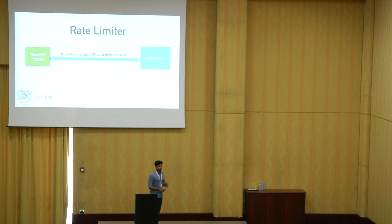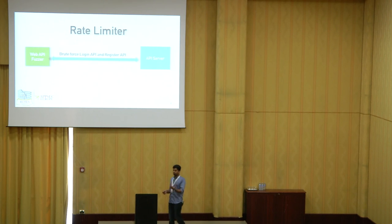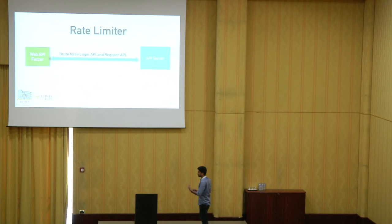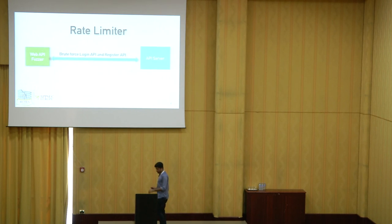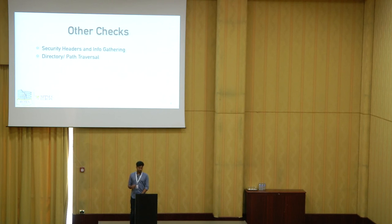We have the rate limiter check, because most mobile APIs don't check for rate limiting. Since it's built for mobile, developers don't think somebody will be brute-forcing the login screen or doing bulk registrations. Those checks are mostly not found in mobile APIs. You can do the brute force check with the rate limiter module. Other checks include security headers, information gathering, directory or path traversal, etc.